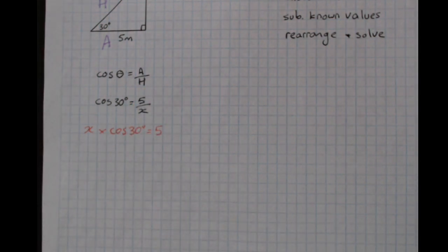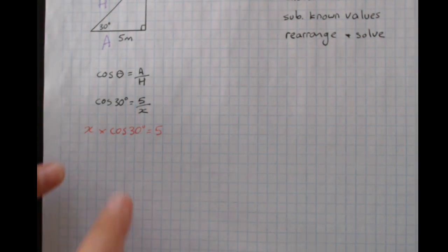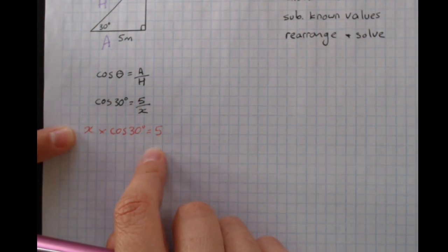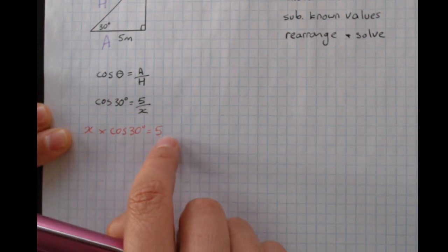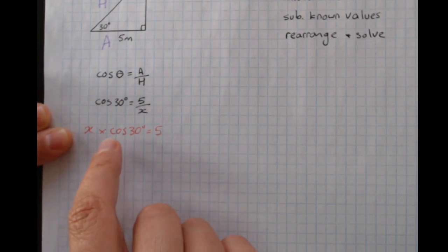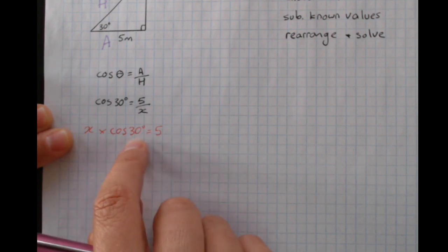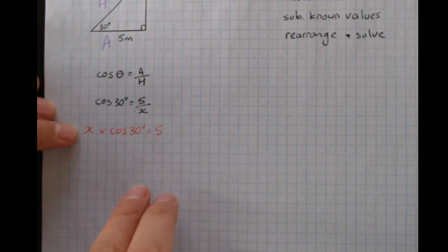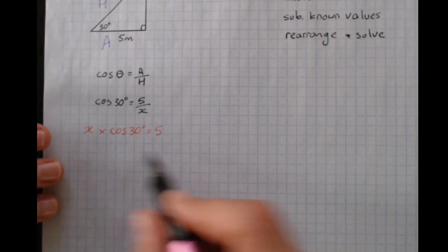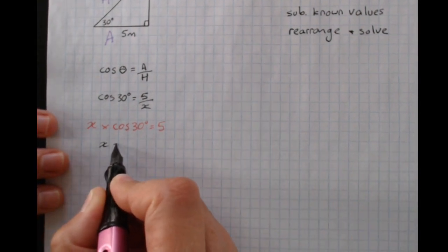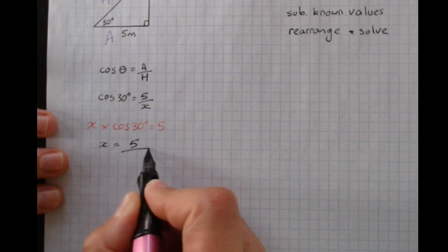Now that hasn't got x on its own, but what it has done is it got x up to the top line. I've got x times cos of 30 equals 5. I just want x on its own, so I need to get rid of this times cos 30, which I can do by doing its opposite. Divide by cos 30 on both sides, which effectively gives me x equals 5 divided by cos of 30 degrees.